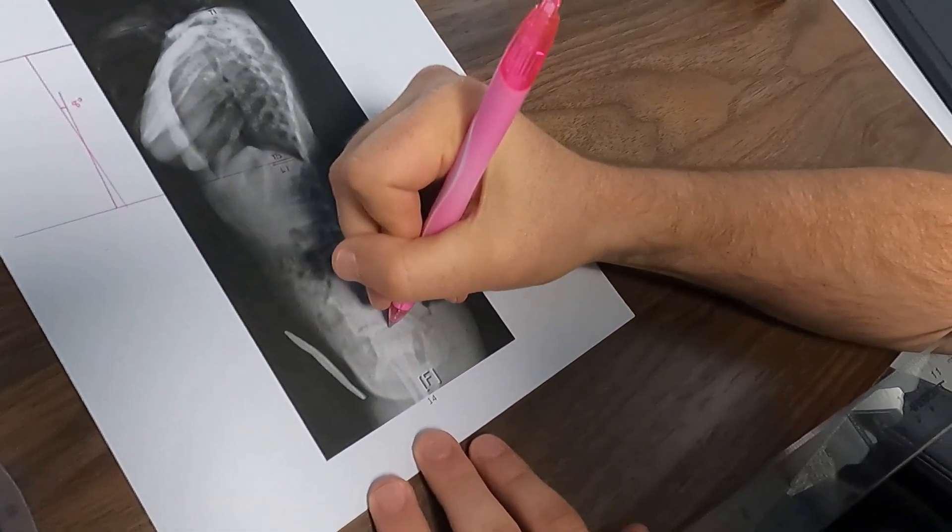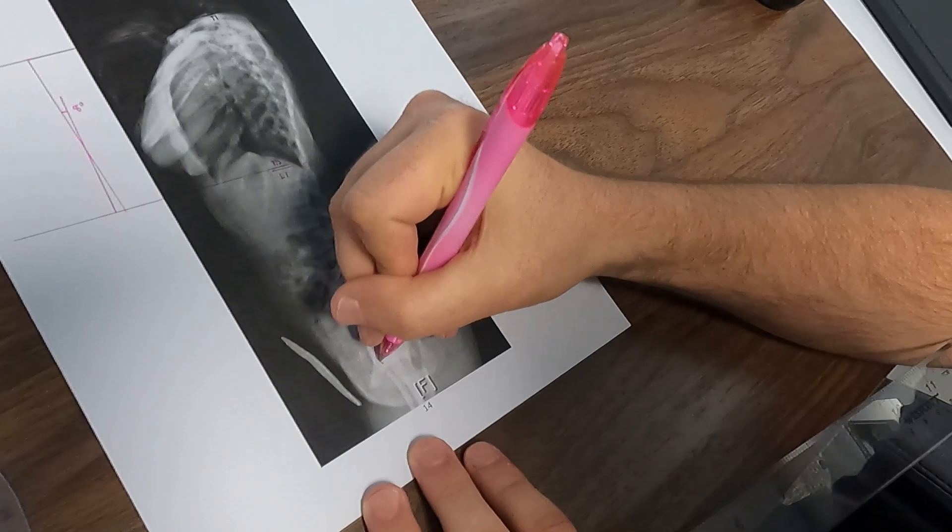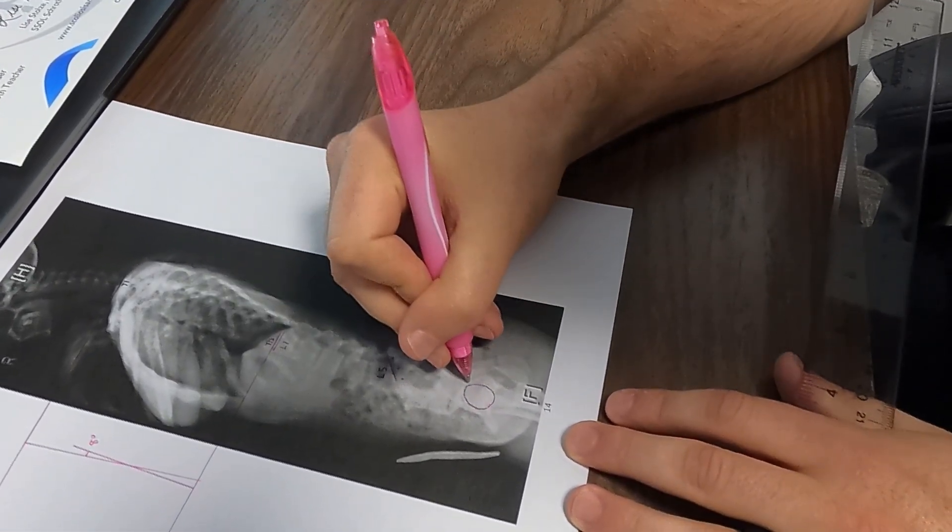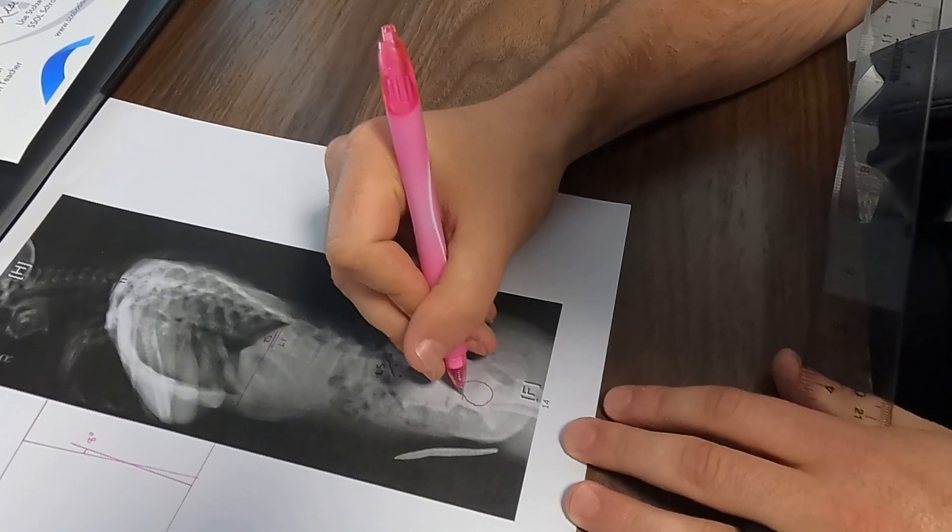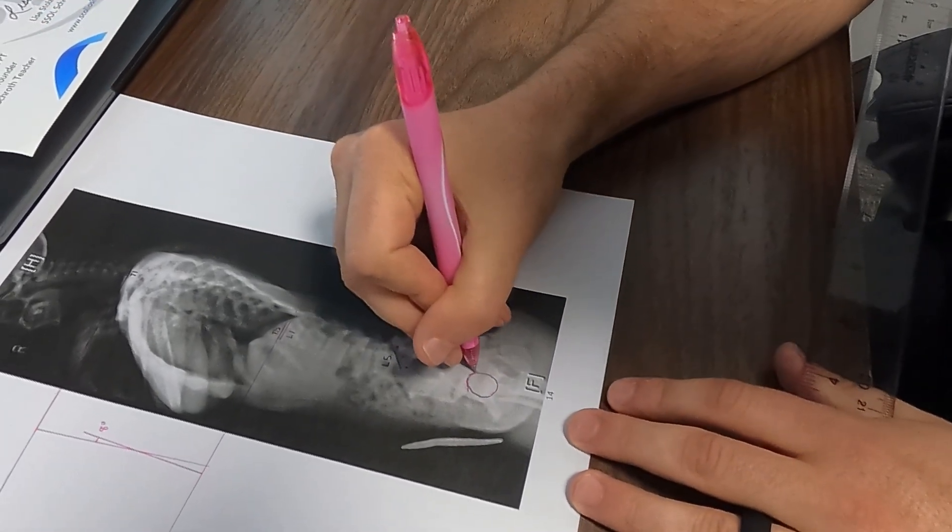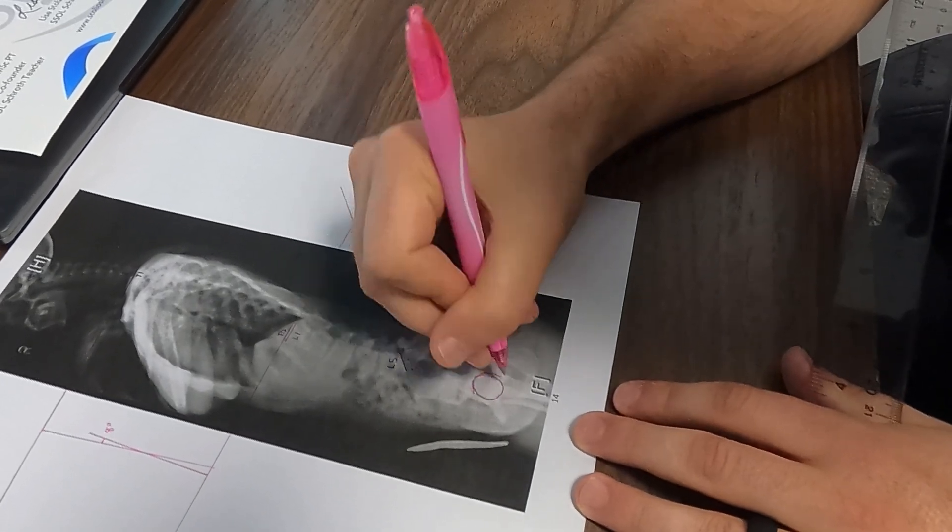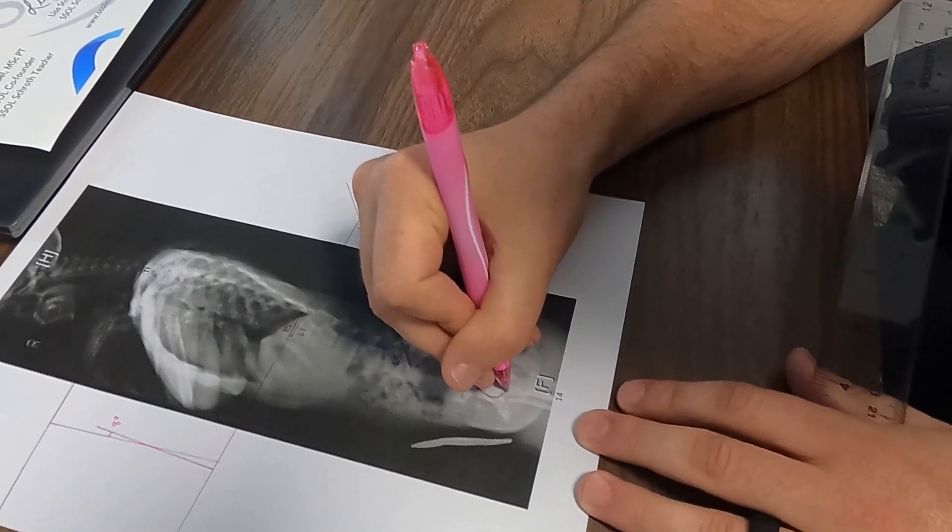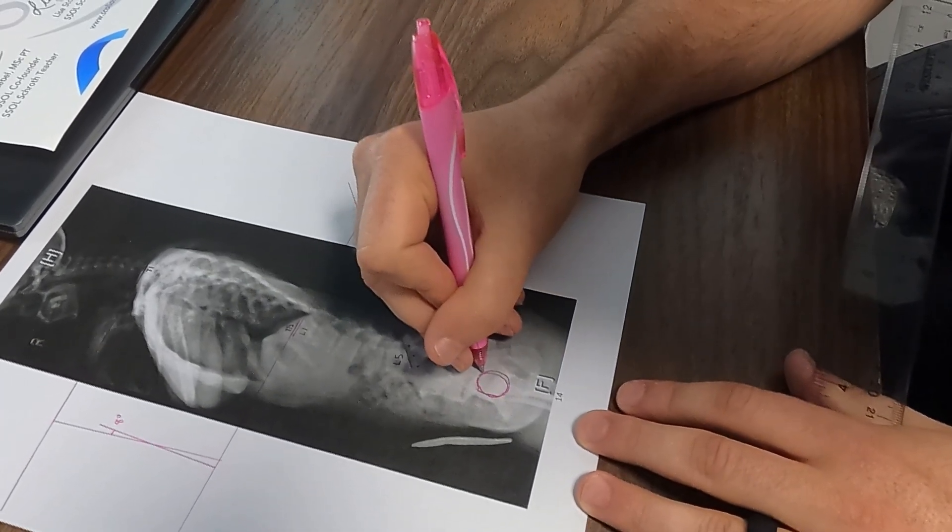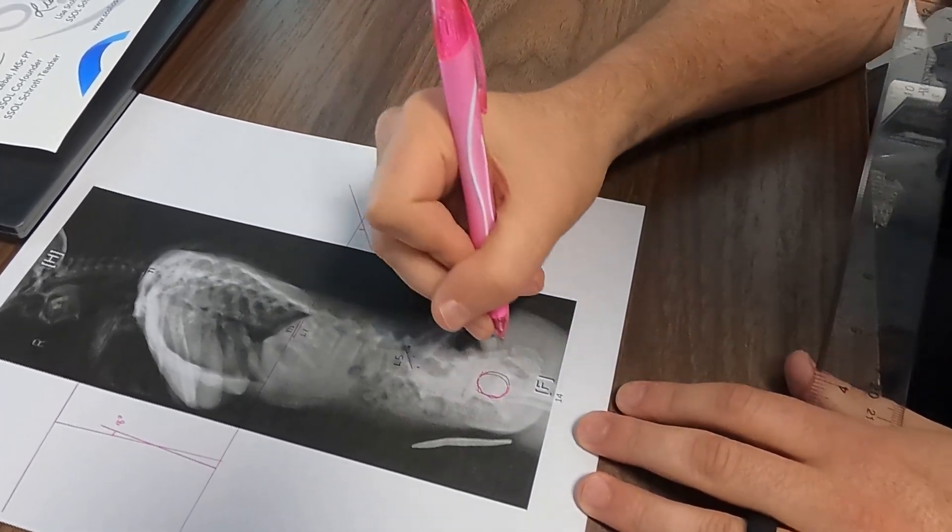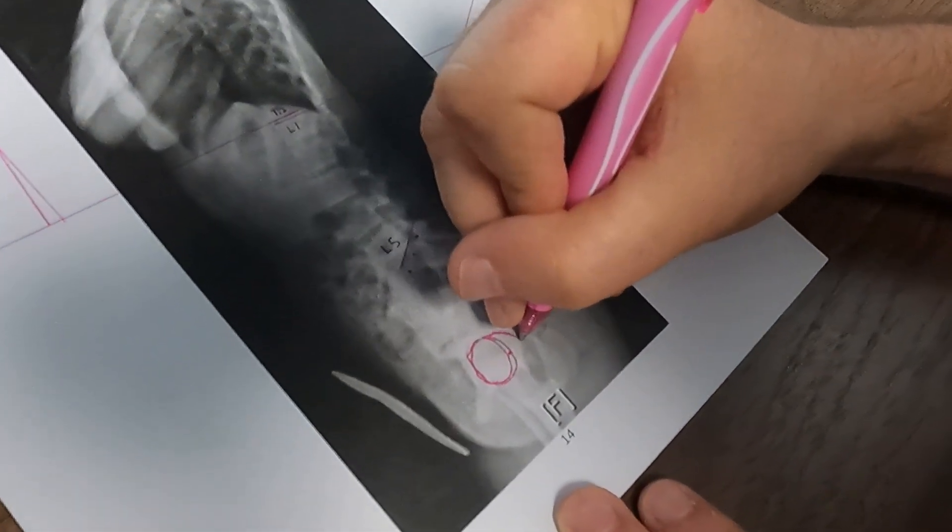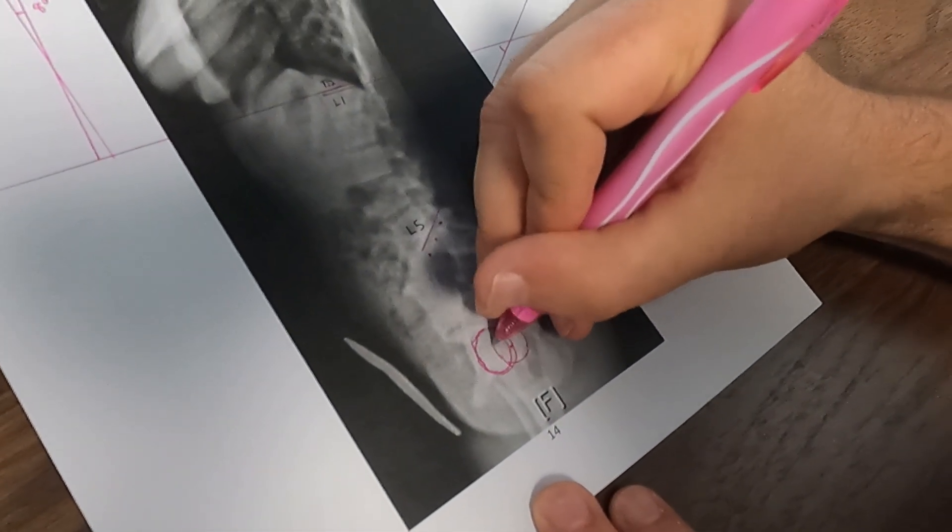And we're going to draw circles around the femoral head. The other one is not going to be as bright on the side that we can't see, but you can see just an outline. Now we're going to draw, it's more about right here.